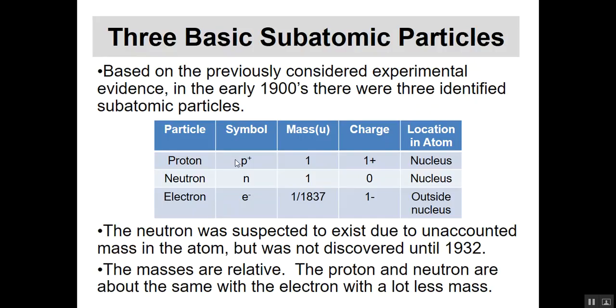The symbols for them are given in this column: protons are P with a plus, neutrons just an N, electrons an E with a little minus as a superscript. The mass I've put in here is relative mass. The proton and neutron have masses that are big and about equal to each other, we just call them one.